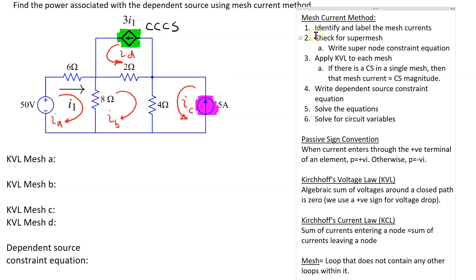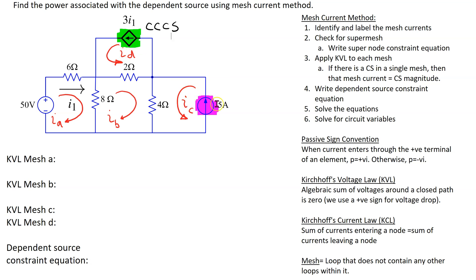The second step is to check for a super mesh. Voltage sources, whether independent or dependent, do not cause a super mesh, but current sources can. Here, this independent current source is only present in one mesh, and similarly the other independent current source is only present in one mesh — neither is located at the boundary of two meshes. Thus, although there are two current sources in the circuit, there is no super mesh.